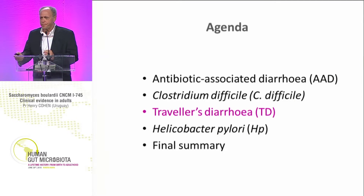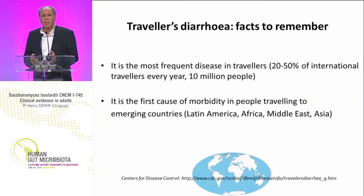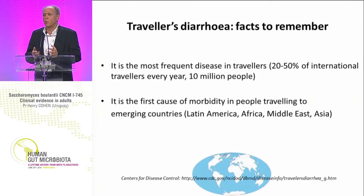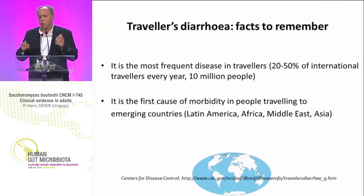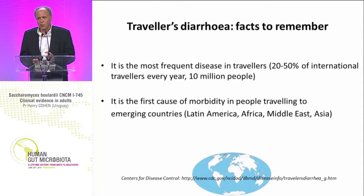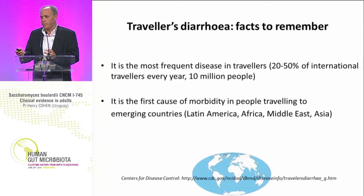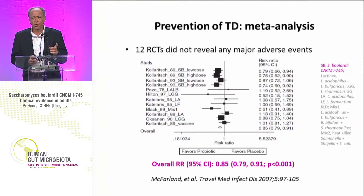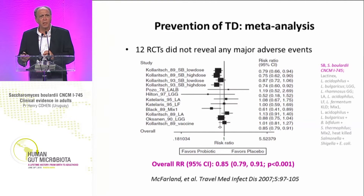Now let's analyze traveler's diarrhea. As you know, it is the most frequent disease a traveler could have — from 20% to 50% of international travelers every year, representing almost 10 million people, and it's the highest morbidity causing condition for people traveling from developed countries to developing countries. This is a very interesting meta-analysis, and works from Kollaritsch are very important. Almost all works favor the use of probiotics with a relative risk of 0.85, and two randomized clinical trials showed no important secondary effects by using probiotics in these patients.